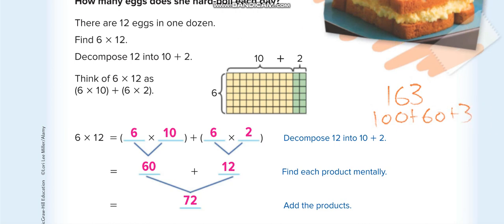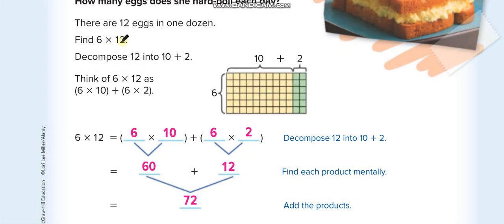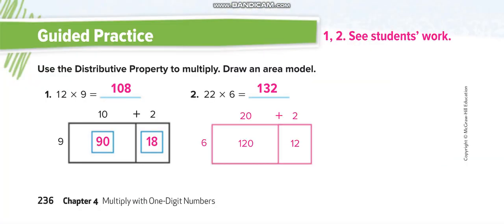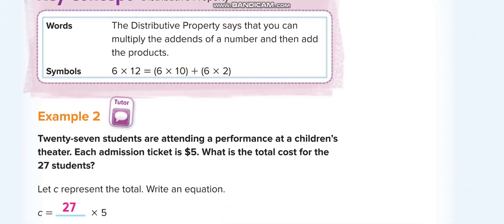After decomposing, we break 12 into two parts: 10 and 2. First we multiply 6 with 10, then 6 with 2. So we have 6 times 10 plus 6 times 2. 6 times 10 equals 60, and 6 times 2 equals 12. Then we add both answers: 60 plus 12 equals 72.